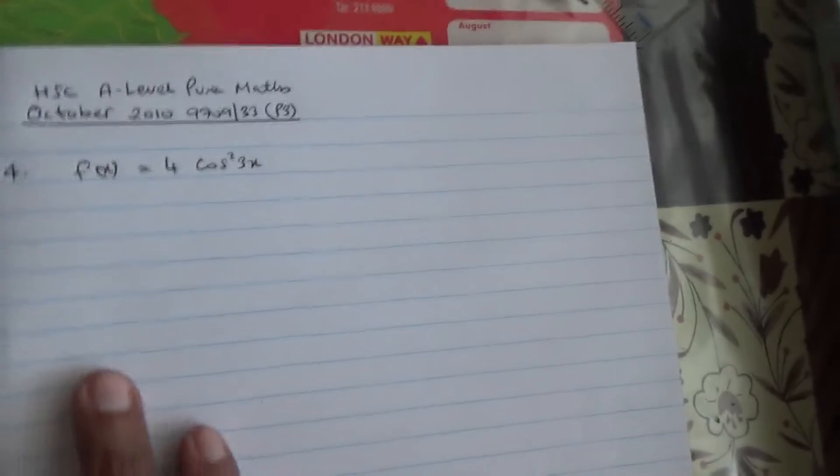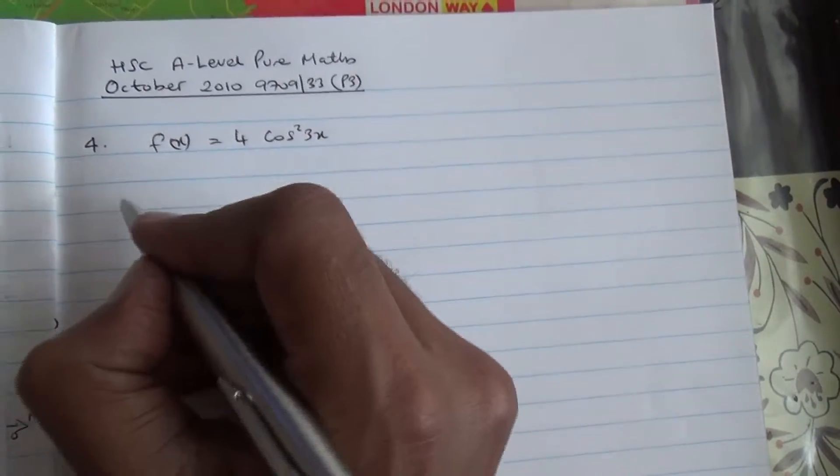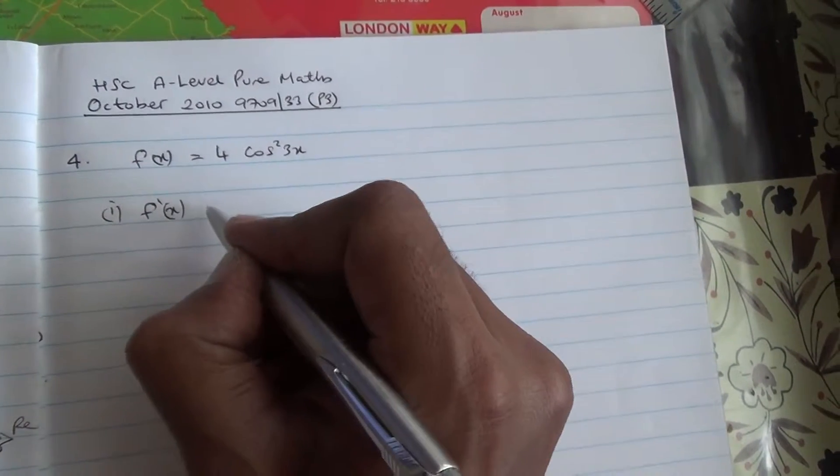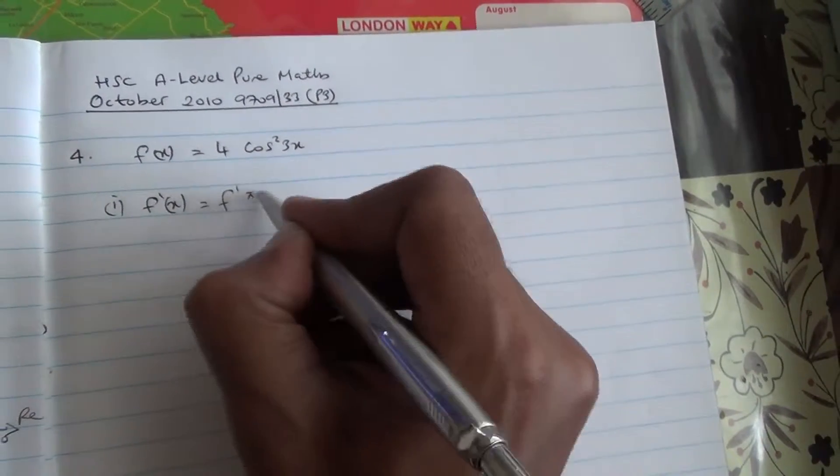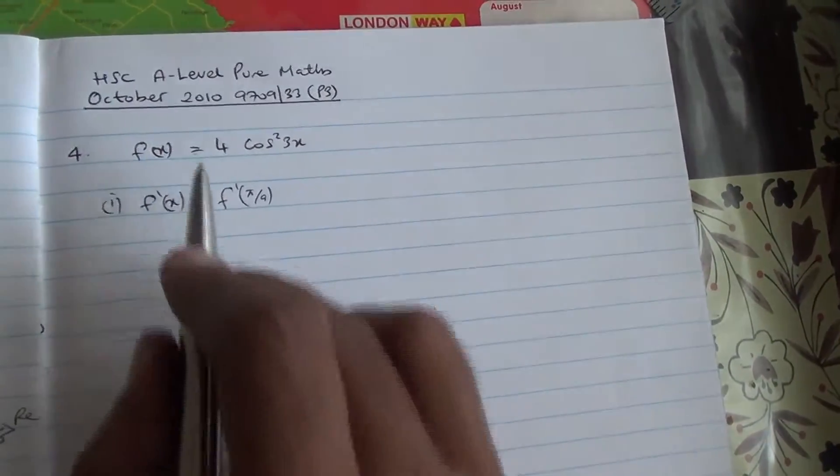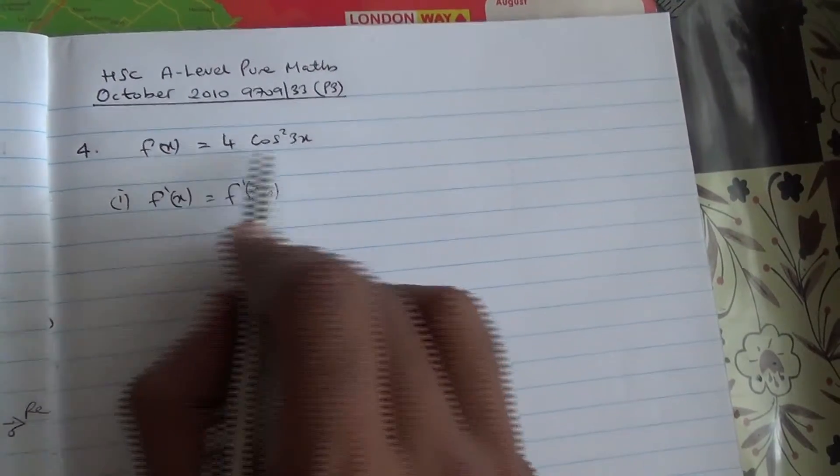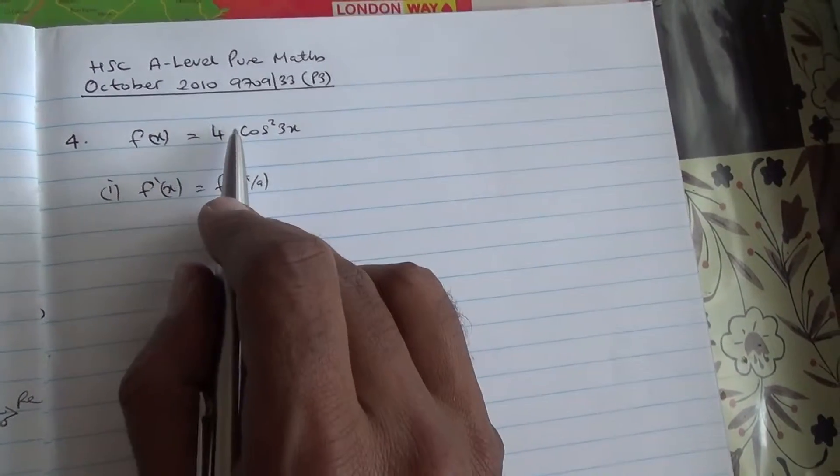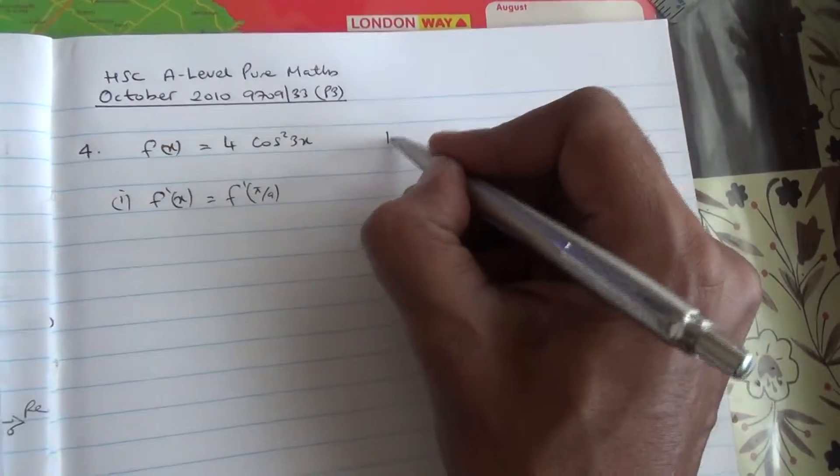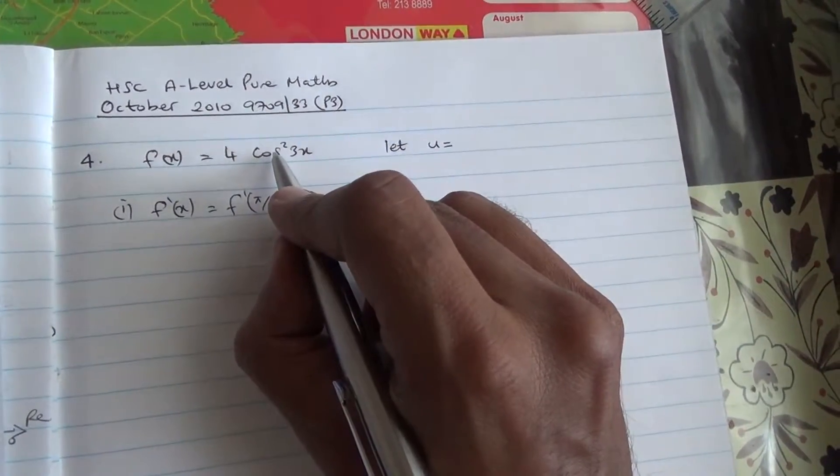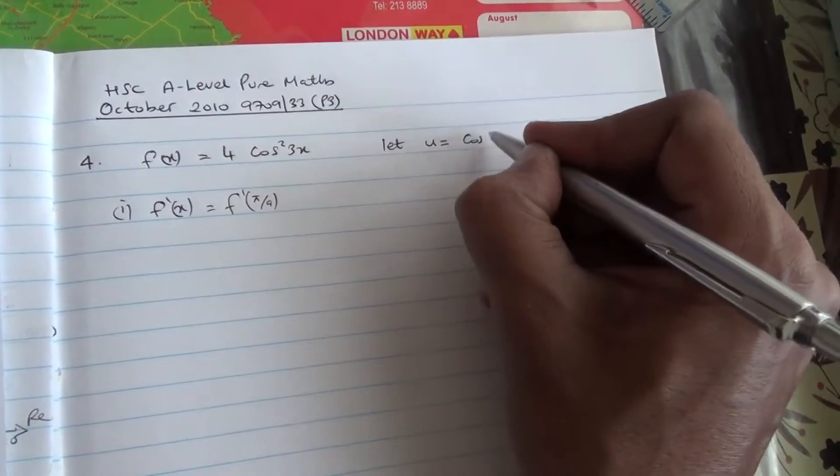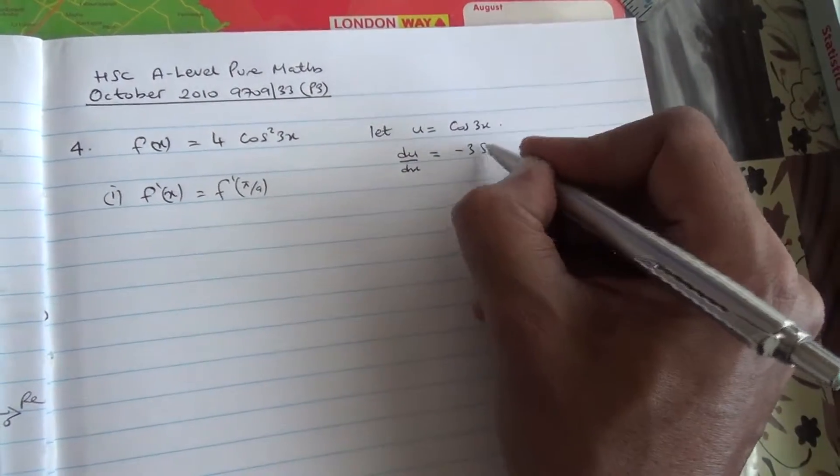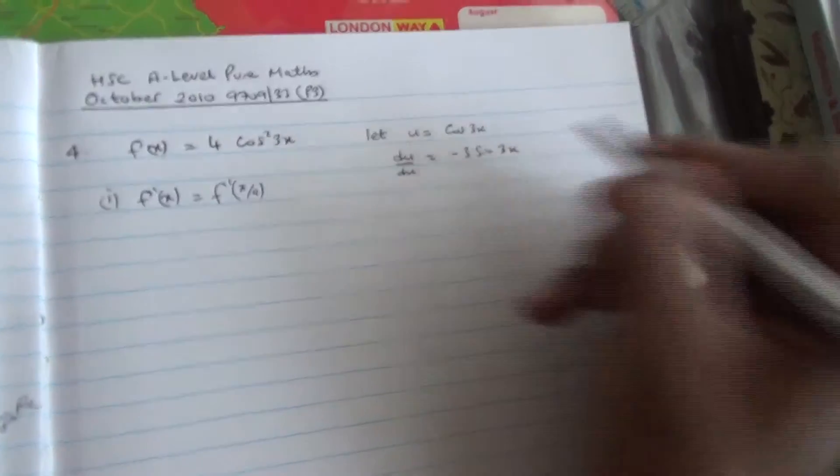Alright, so let's do the first part. We need to find f dash x, where x is π/9. Now, what is f dash? It is the differentiation of the function. So to proceed, first I'm going to say let u equal cos 3x. Therefore, du/dx is equal to negative 3 sin 3x.